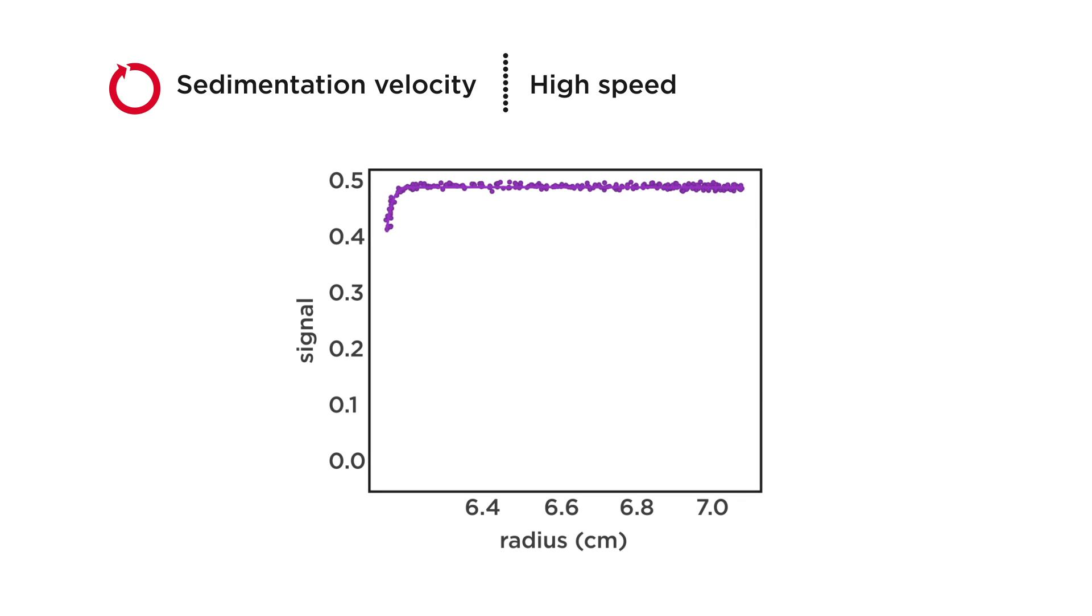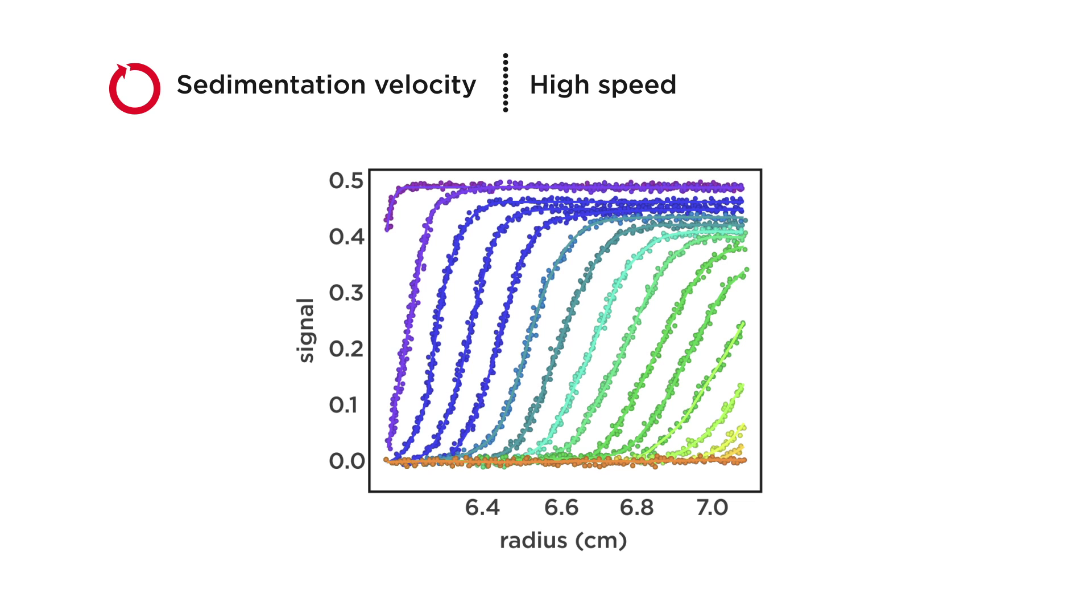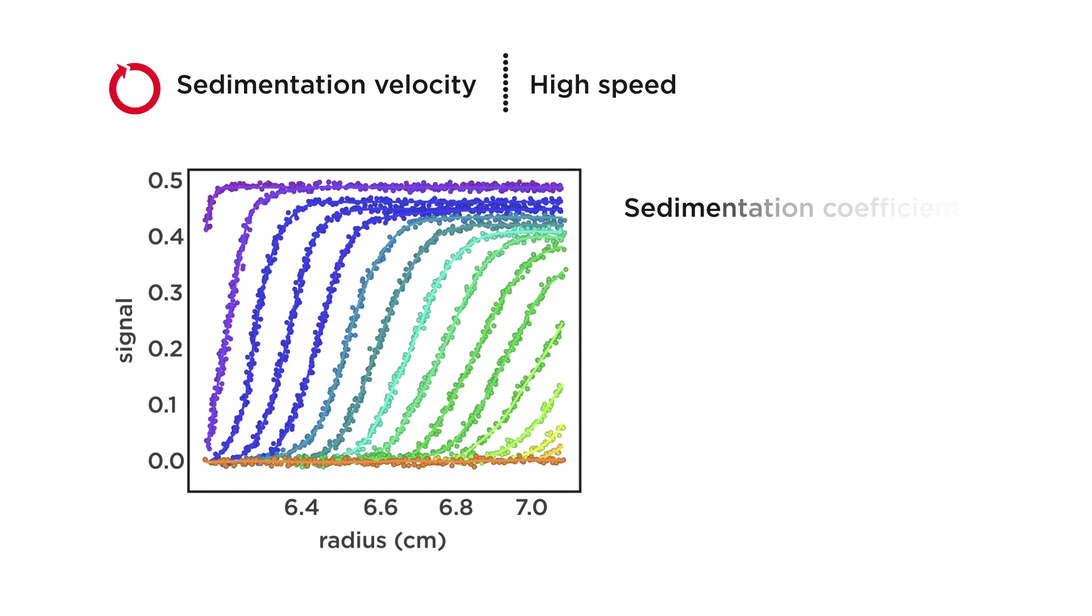Each line on the graph represents a wavelength scan. As the protein sediments towards the bottom of the centrifugation cell, the wavelength flattens. The distribution movement over time is used to calculate the sedimentation coefficient, diffusion coefficient, effective mass of solute components, shape, and molecular weight of the particles under study.